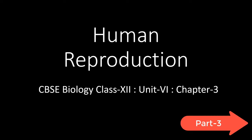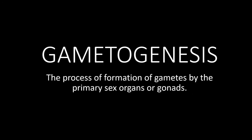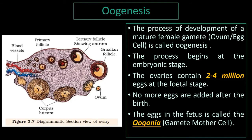In this video, we are going to continue learning the chapter human reproduction of class 12th biology. We had started off with gametogenesis and learned about spermatogenesis in human males. Now we will learn the process of gametogenesis in human females, that is oogenesis. Unlike in the male where the process begins at puberty, oogenesis begins in the embryonic stage.